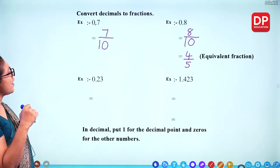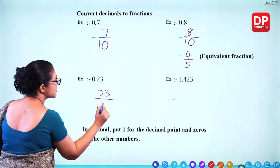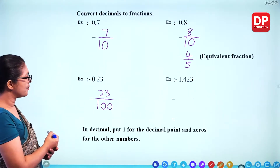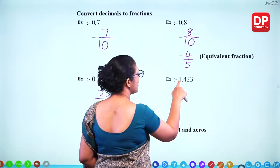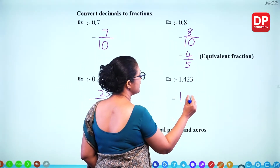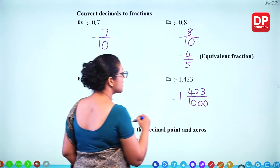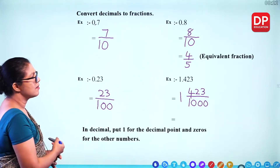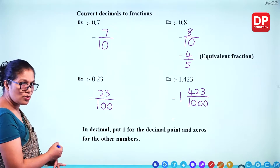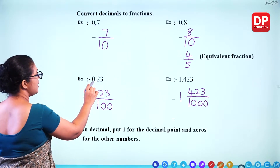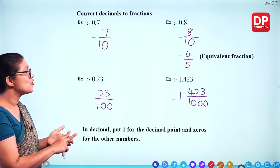For 0.23, convert to a fraction: 23 is in the numerator. In the denominator, put 1 and 2 zeros (since there are 2 decimal places), giving 23 over 100. For 1.423, write as 1 and 423 over 1000 (3 decimal places). The rule: put 1 for the decimal point and add zeros for each decimal place — 2 places means 2 zeros, 3 places means 3 zeros.